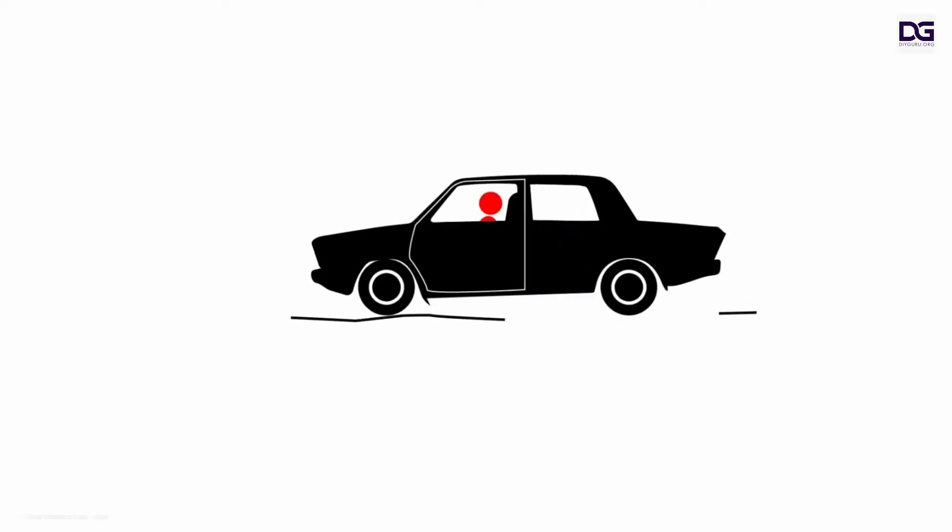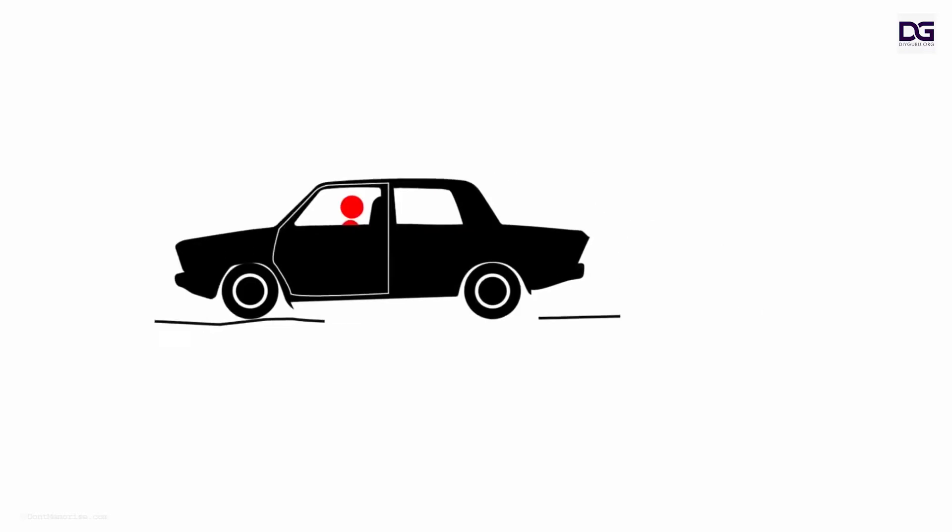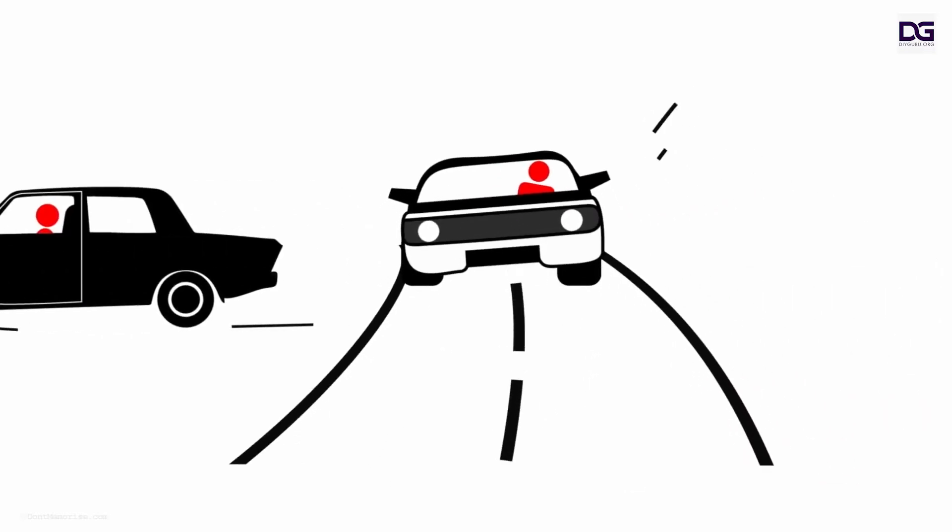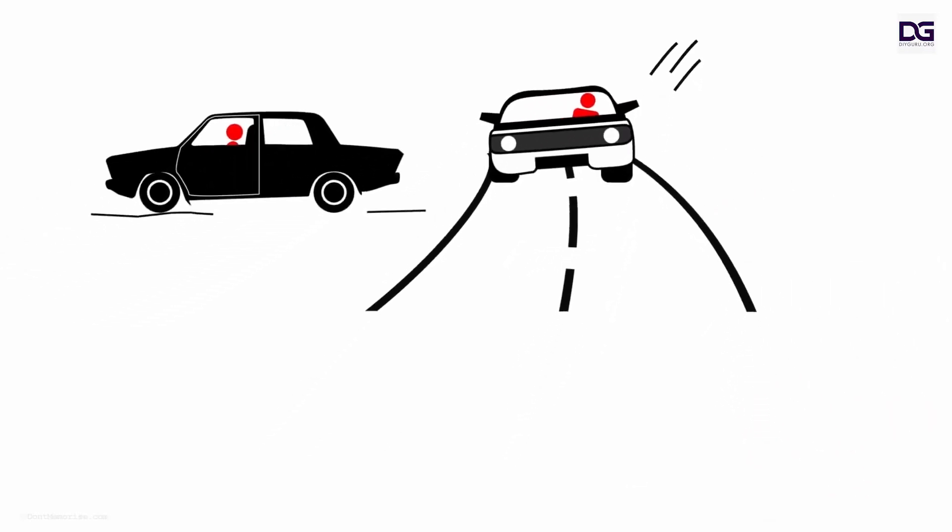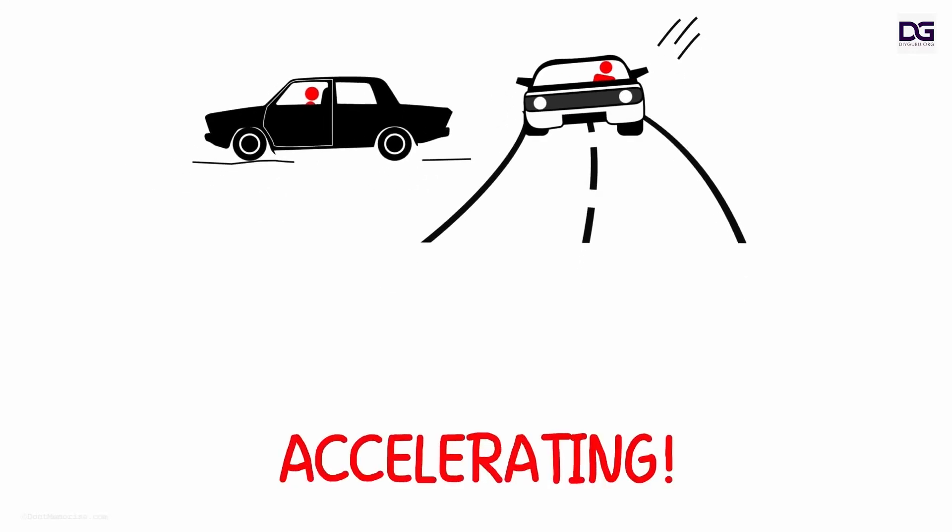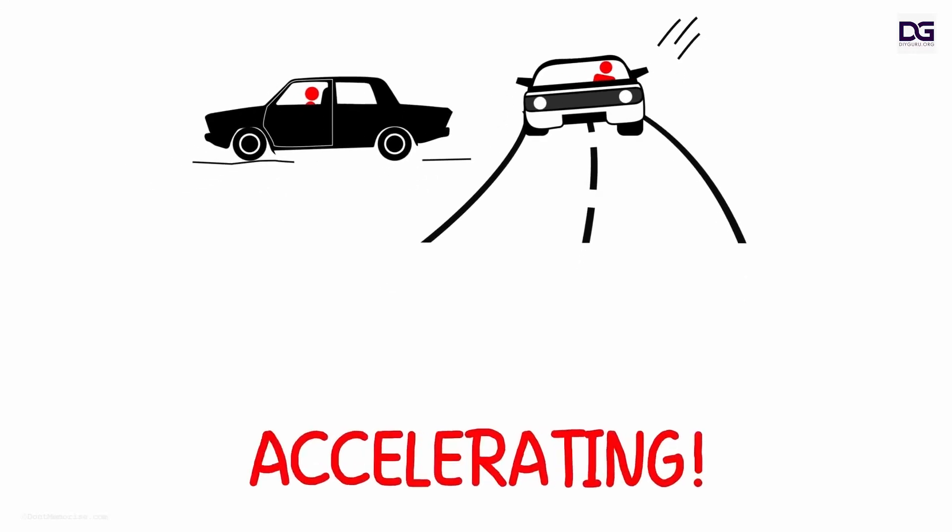When we are in a stationary car that moves rapidly to gain speed, we get pushed back against our seat. When brakes are applied, we get pushed ahead, or when we take a sharp right turn, we are pushed towards the left. These are all situations where we are accelerating. We have all experienced this whether in a car, bus, or while riding a motorbike.